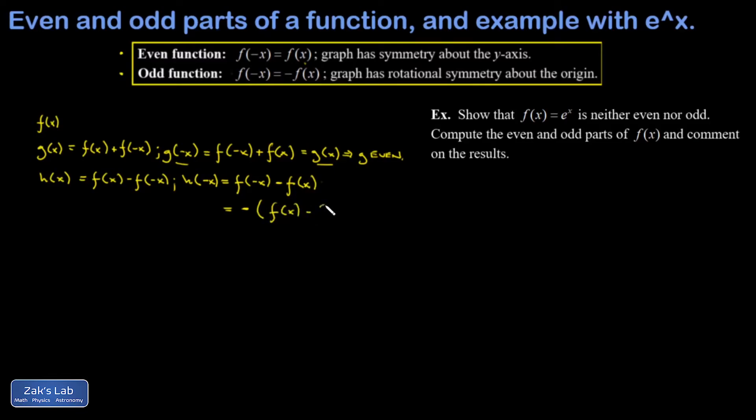And a negative f of negative x, and there's my original function h. So I get negative h of x. Since h of negative x is equal to negative h of x, that shows that h is an odd function.